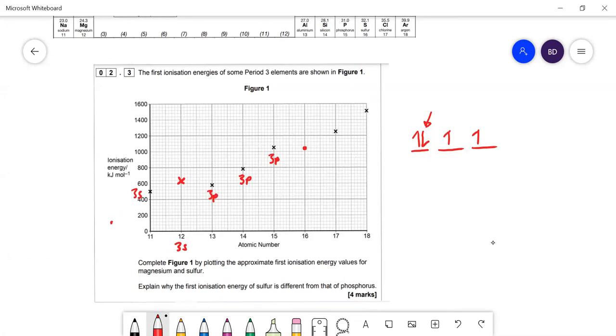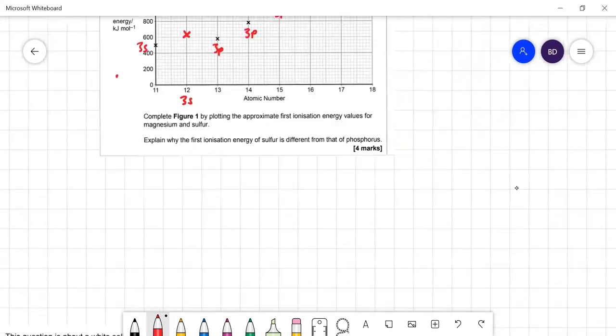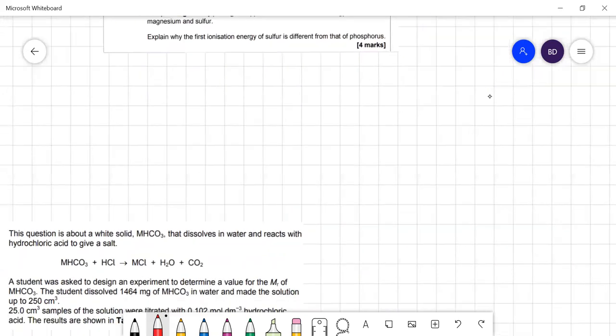Explain why the first ionization of sulfur is different from phosphorus. It's a little bit lower than you might expect because the electron is paired in the p orbital, even though the nuclear charge is greater.